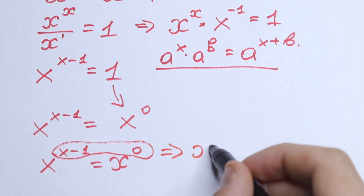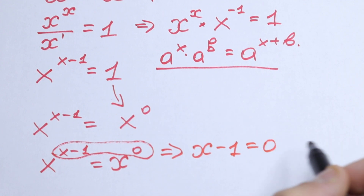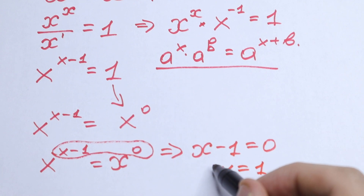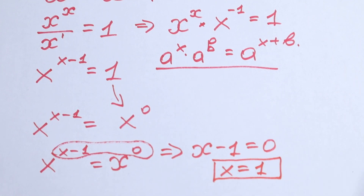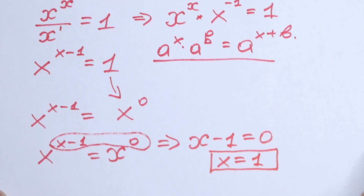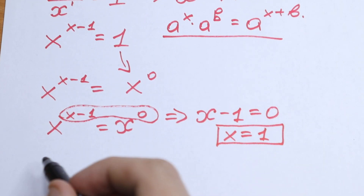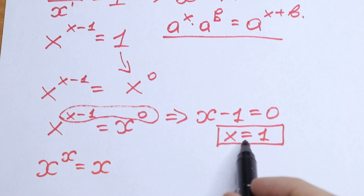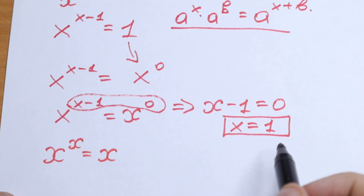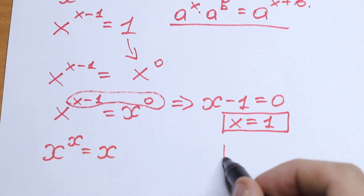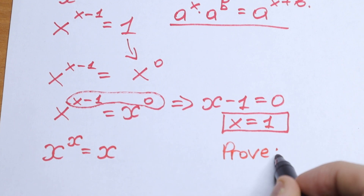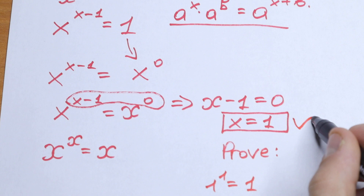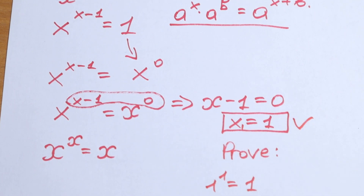From x minus 1 equal to 0, we get x equal to 1. Writing our original equation once more — x to the power x equals x — we plug in x equals 1: 1 to the power 1 equals 1, which is correct. So our first root is good.